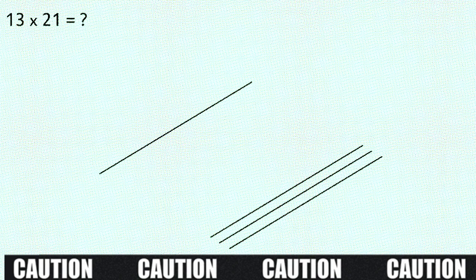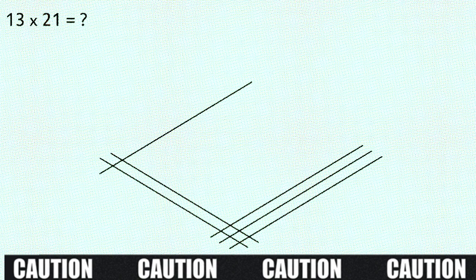After the multiplication sign the first number we have is 2, so we draw two lines next to each other from here to here. And the final digit is 1, so we draw one line from here to here. That's the first part complete and it should look something like this.